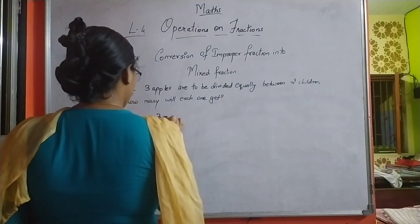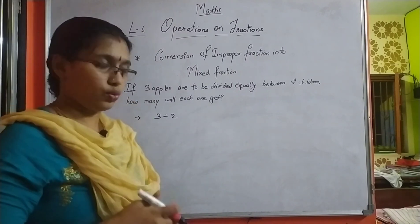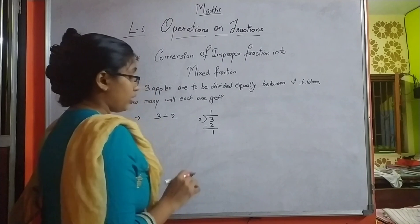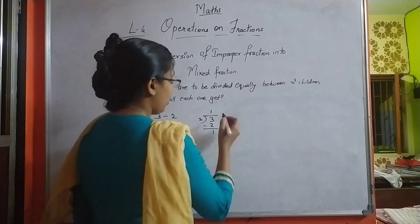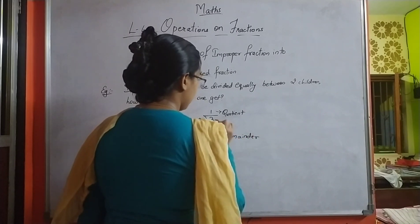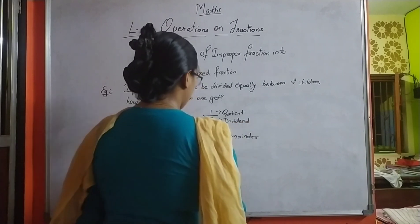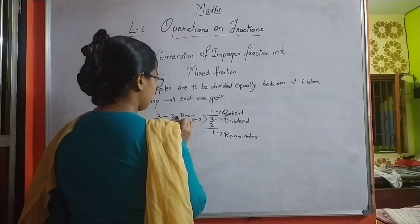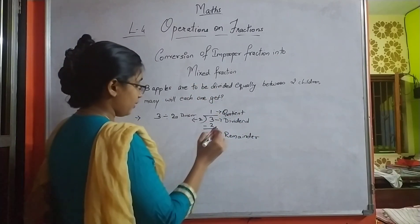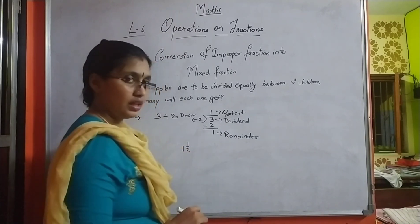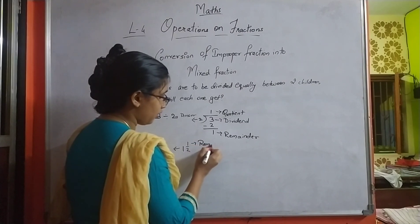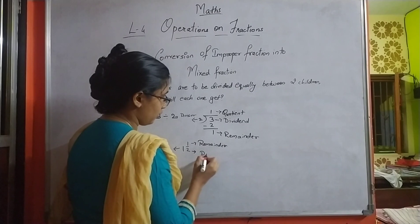We will divide three by two. Two is our divisor and three is our dividend. In this division we also get a remainder. The quotient is 1, the remainder is 1, the dividend is 3, and the divisor is 2. Now, how to write this answer in mixed fraction form? We write it as 1 and 1 upon 2. This first 1 is your quotient, this second 1 is your remainder, and the 2 is your divisor.